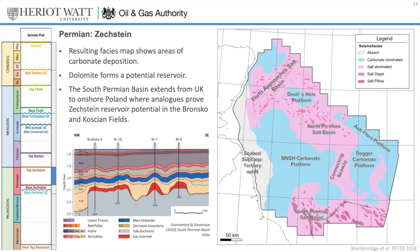The map shows significant carbonate deposition to the east on the Dogger and Och platforms, indicating that these were relative highs at the time. This was separated from the Mid-North Sea High carbonate platform by a north-south trending seaway connecting the north and south Permian basins. Although not yet penetrated by wells, seismic mapping suggests an additional platform at the north in Devil's Hole. This play produces at the Och field in the northeast, and there is one unsanctioned discovery within an isolated platform in the south Permian basin at Korsgam. However, this play has not yet replicated the success seen to the east in Poland, where numerous fields produce from this stratigraphic level.